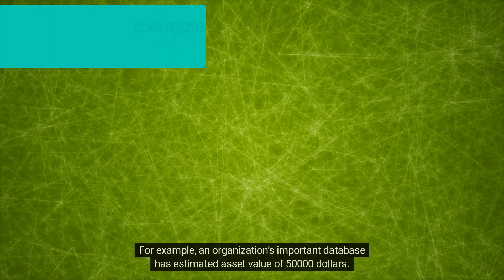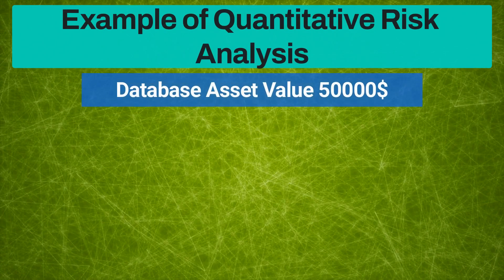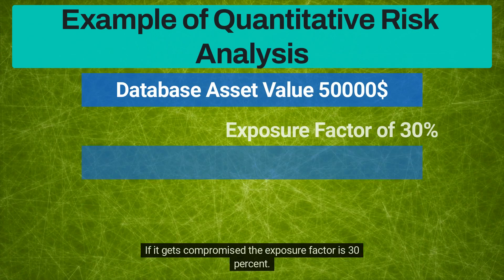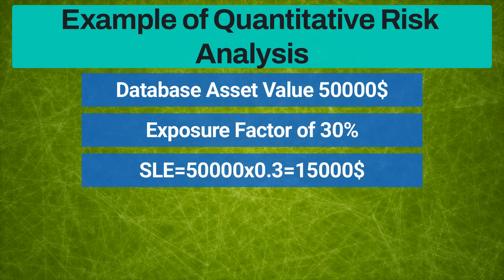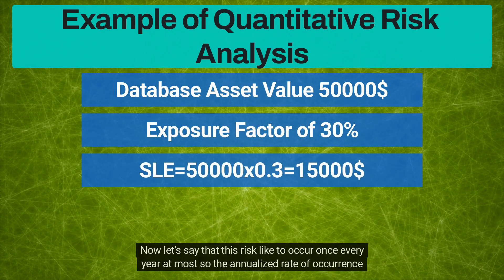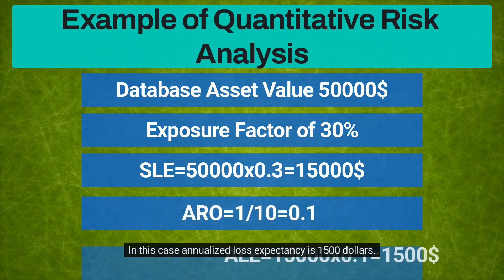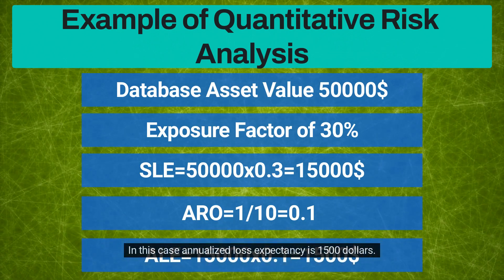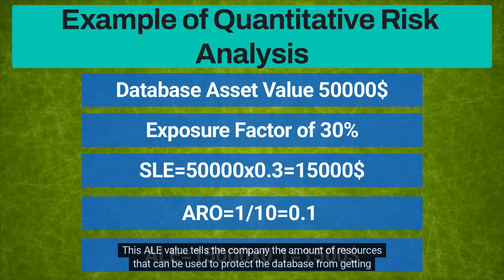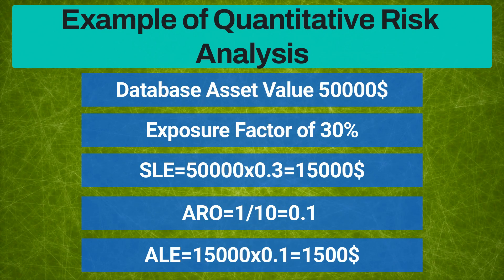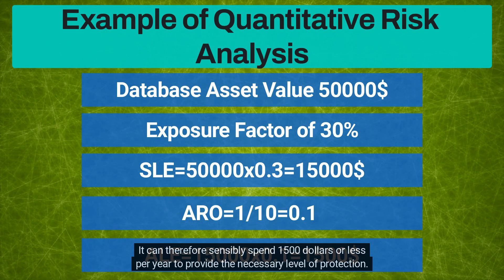For example, an organization's important database has an estimated asset value of fifty thousand dollars. If it gets compromised, the exposure factor is thirty percent. In this case, the single loss expectancy is fifteen thousand dollars. This risk is likely to occur once every ten years, so the annualized rate of occurrence is zero point one. In this case, the annualized loss expectancy is one thousand five hundred dollars. This ALE value tells the company the amount of resources that can be used to protect the database — it can therefore sensibly spend one thousand five hundred dollars or less per year to provide the necessary level of protection.